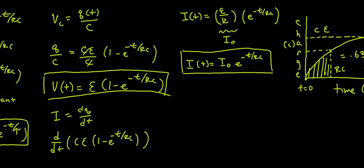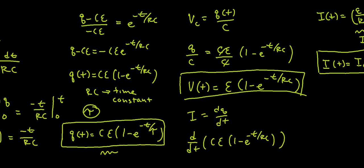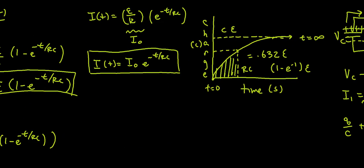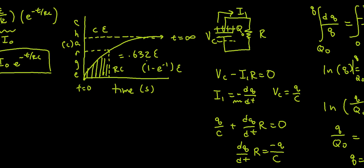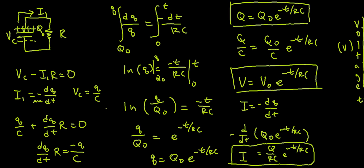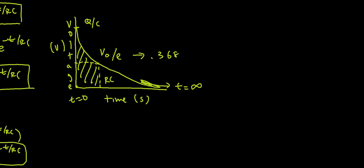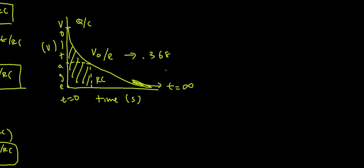Quick review: once you solve for your function Q of t, you can derive almost all the rest of the equations. For charging — battery, resistor, capacitor — I equals positive dQ/dt because you're increasing. Divide by C to get V of t; take the derivative to get I of t. RC gives 63.2% of maximum charge. For discharging — capacitor and resistor only — I equals negative dQ/dt because you're losing charge. From Q of t you can derive V and I. At RC, 36.8% of charge remains.